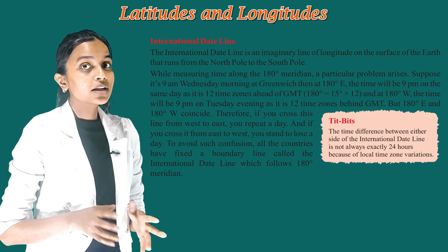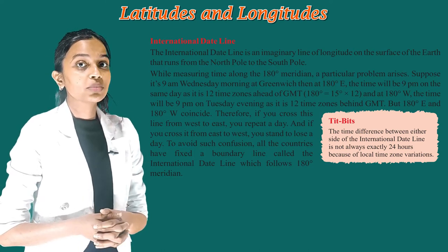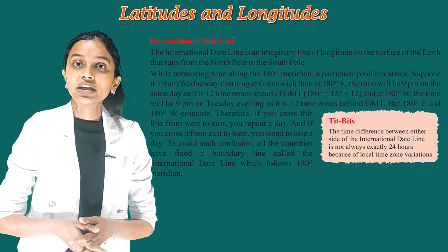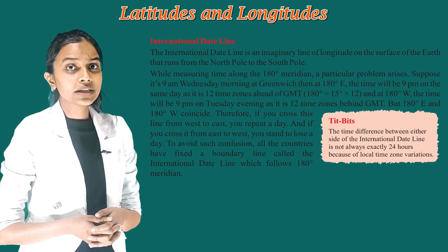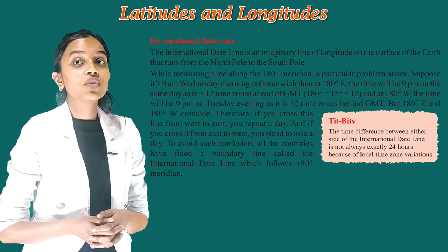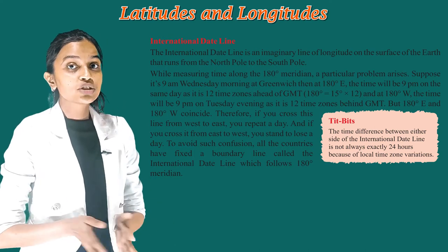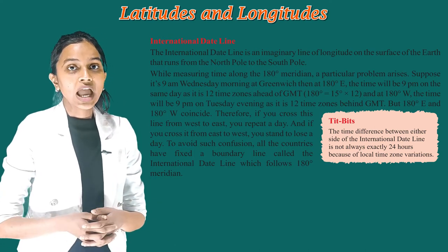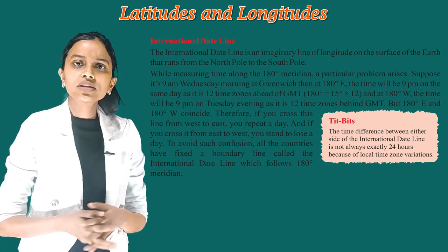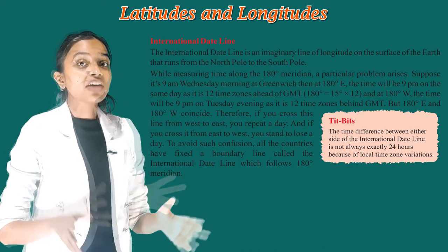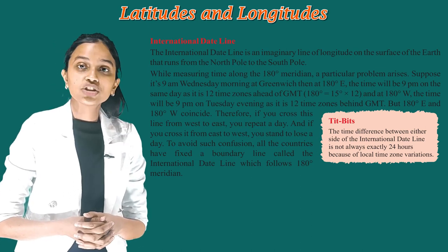180 degrees equals 15 degrees multiplied by 12. And at 180 degrees west, the time will be 9pm on Tuesday evening, as it is the 12th time zone behind GMT. But 180 degrees east and 180 degrees west coincide. Therefore, if you cross this line from west to east, you repeat a day. And if you cross it from east to west, you stand to lose a day. To avoid such confusion, all countries have fixed a boundary line called the International Date Line, which follows the 180 degree meridian.